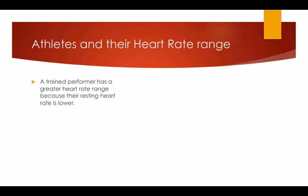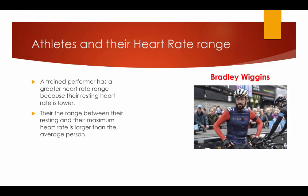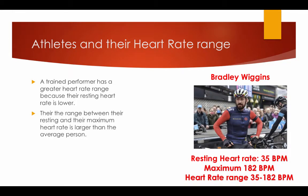A trained performer has a greater heart rate range because their resting heart rate is lower — the range between their resting and maximum heart rate is larger than for the average person. For example, Bradley Wiggins: his resting heart rate is 35 beats per minute, and his maximum heart rate is 182 because he is 38 years old (220 minus 38 equals 182), giving him a heart rate range of 35 up to 182 beats per minute.